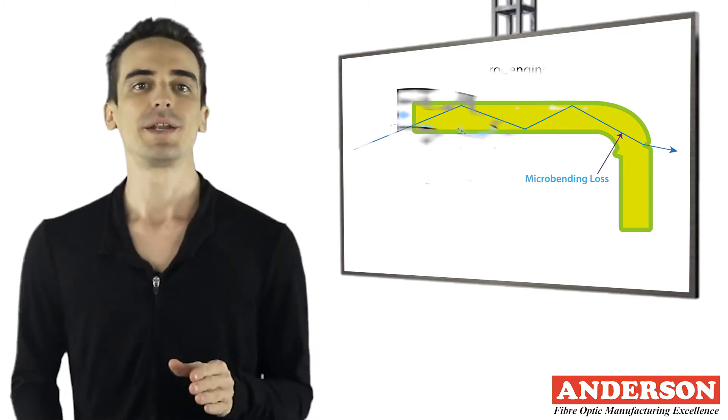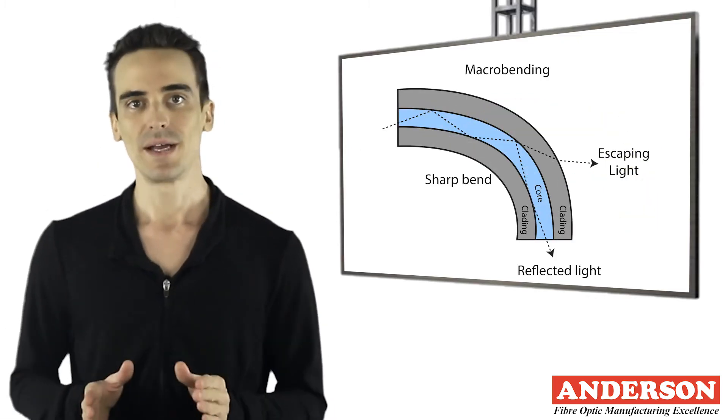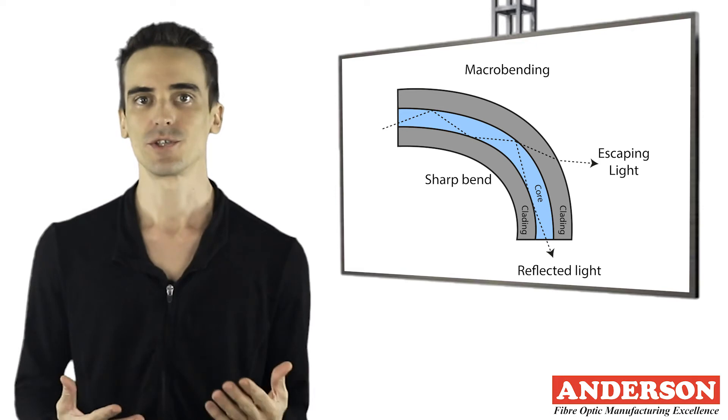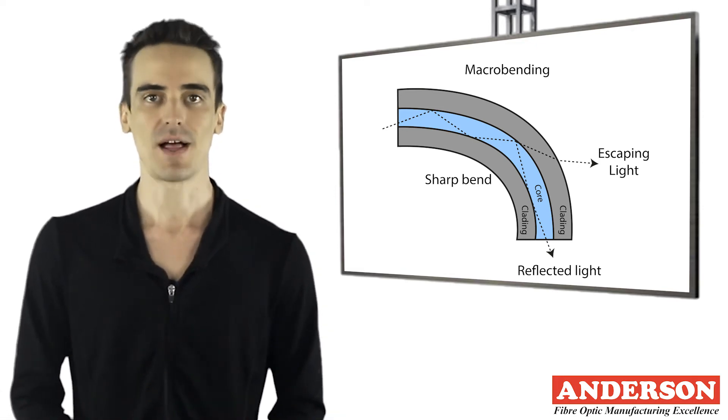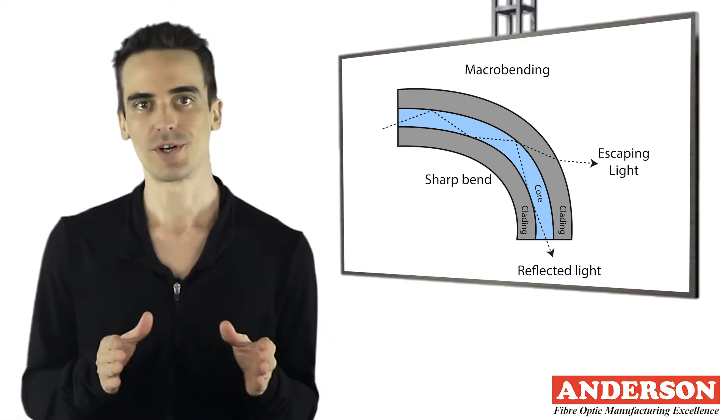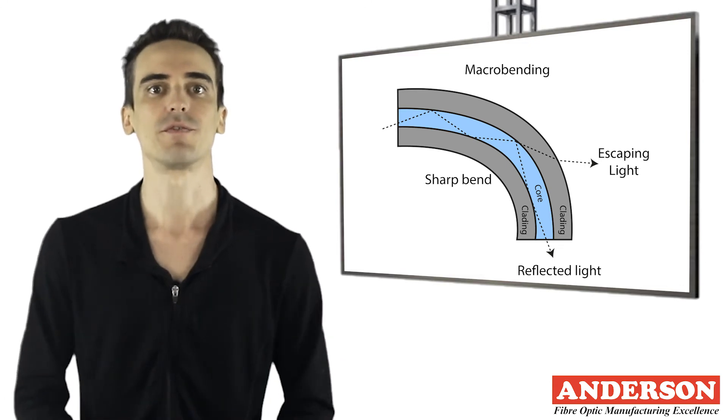Macro bending results from large visible bends in the optical fiber that can cause a reduction of optical power in the glass. If a bend is imposed on an optical fiber, strain is placed on the fiber along the region that is bent.